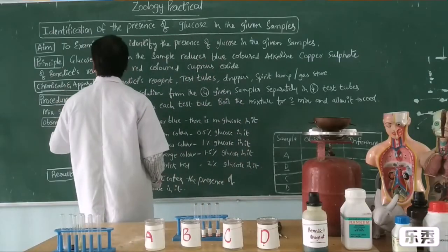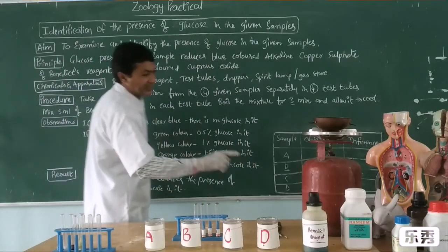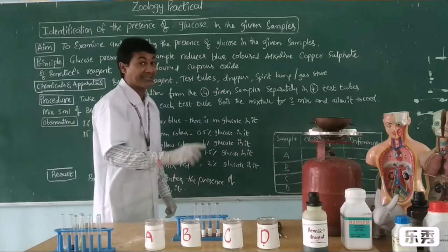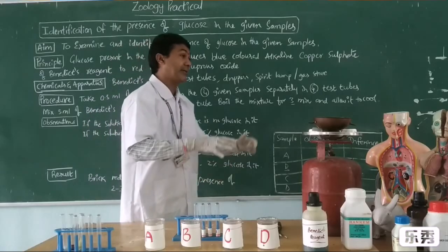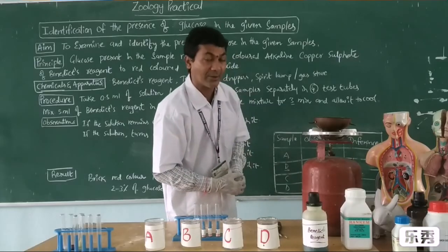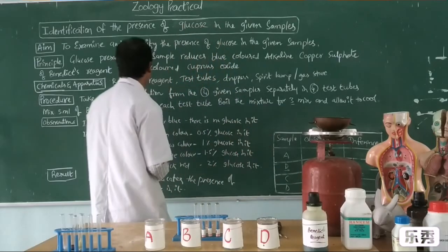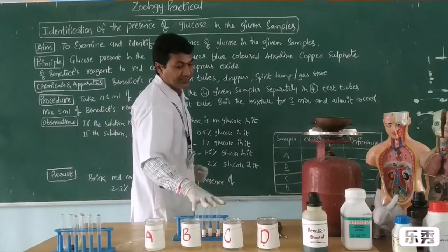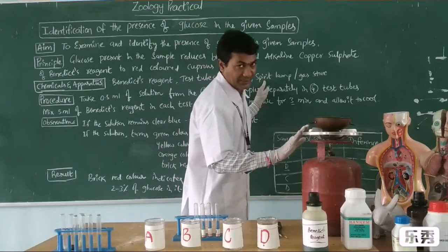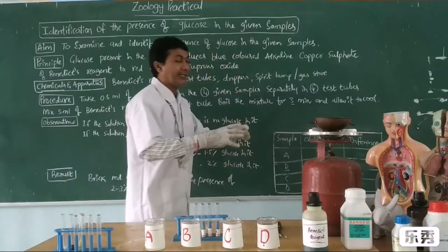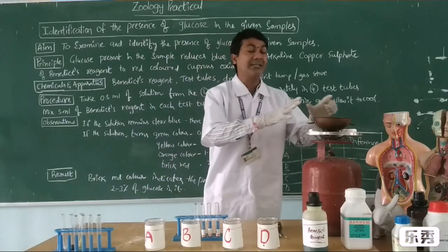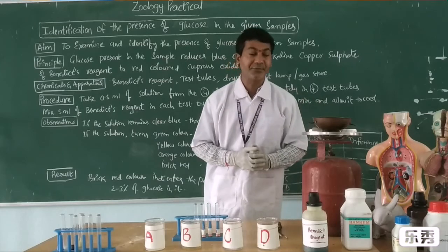Chemicals and apparatus: we have Benedict reagent — we call it Benedict qualitative reagent because it not only identifies glucose but also determines what percent of glucose is present. We also have four test tubes, droppers, and a spirit lamp. We need to heat the test tubes. After adding the Benedict solution, these four test tubes are heated on a water bath.